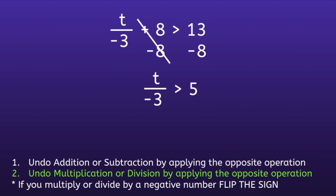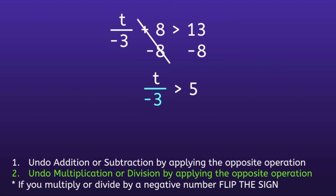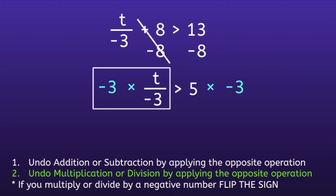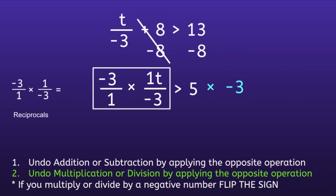This moves us on to step number two: undo multiplication or division by applying the opposite operation. Notice the fraction bar means division, so t is being divided by negative 3. The opposite of dividing by negative 3 is multiplying by negative 3. On the left, I'll change negative 3 into a fraction by giving it a denominator of 1. There's also an invisible number in front of t, and that invisible number is 1. Pulling out those fractions, we have negative 3 over 1 times 1 over negative 3. Notice the numerator and denominator are switched — these are called reciprocals, and any time we multiply reciprocals, we always get 1.